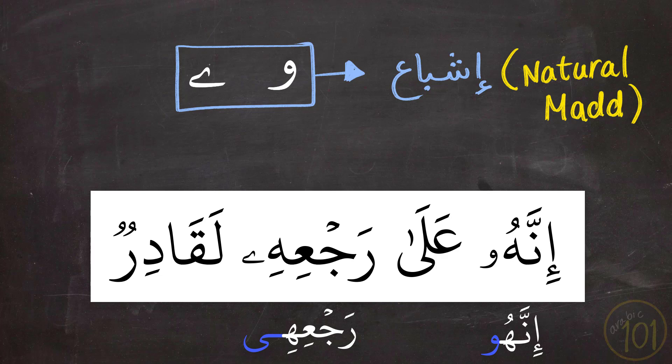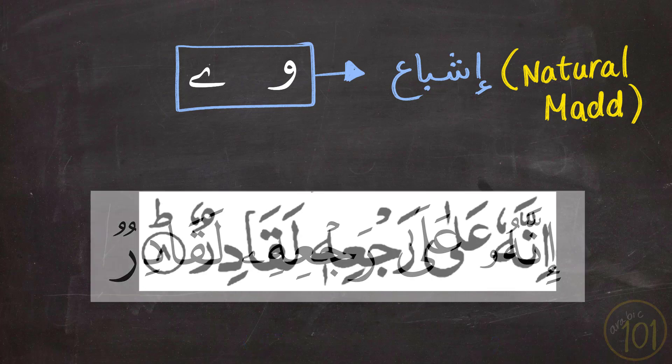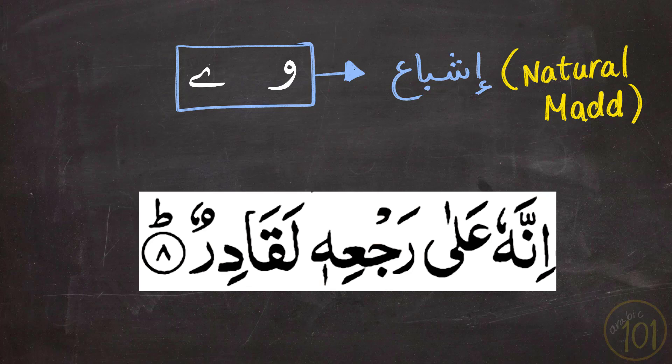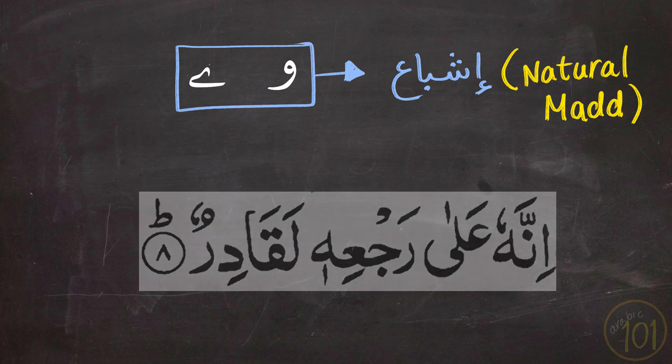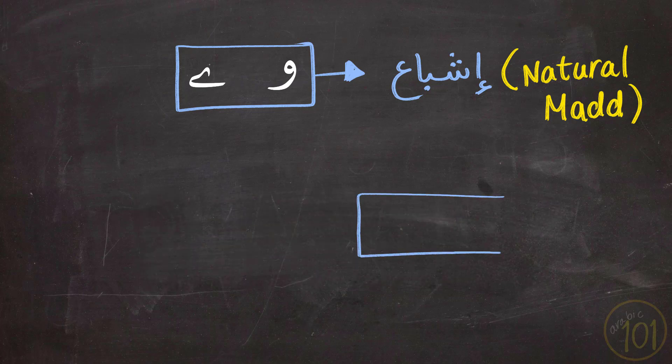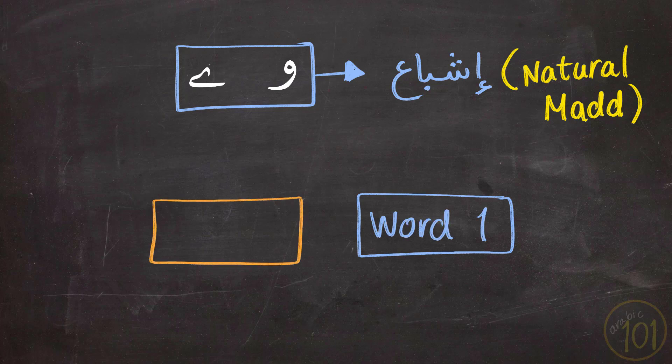But if you're not using the same type of مصحف, or a مصحف that doesn't have signs, or not the same signs, it can become challenging to recite properly. This lesson will help you understand how إشباع exists, and what are the exceptions to its rules.